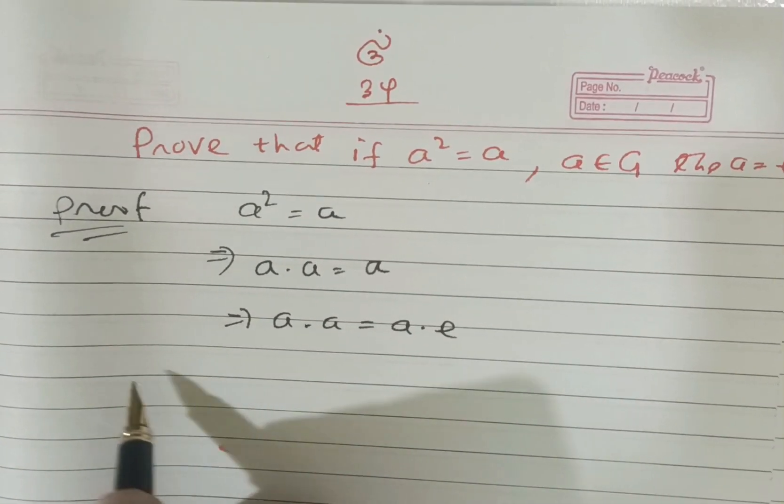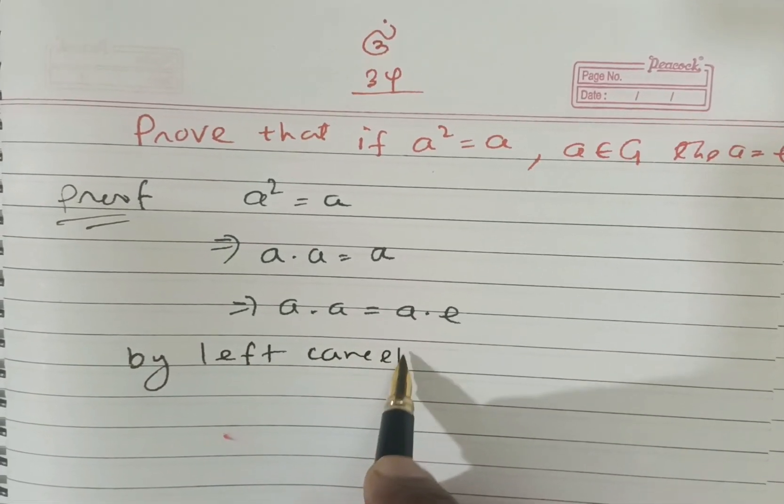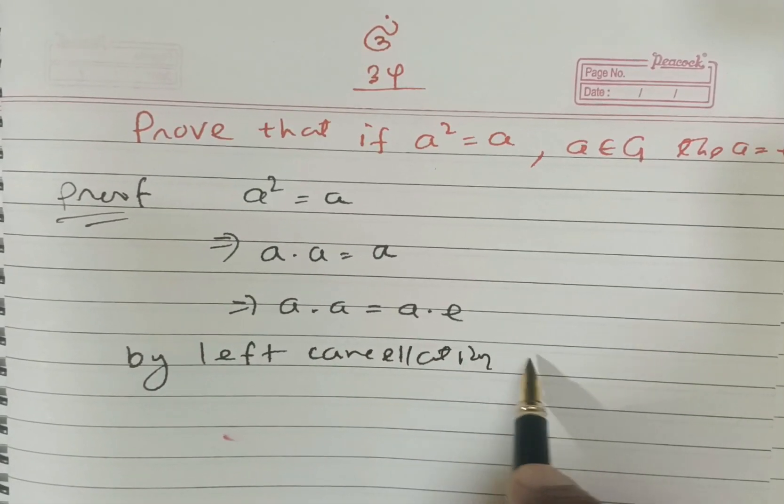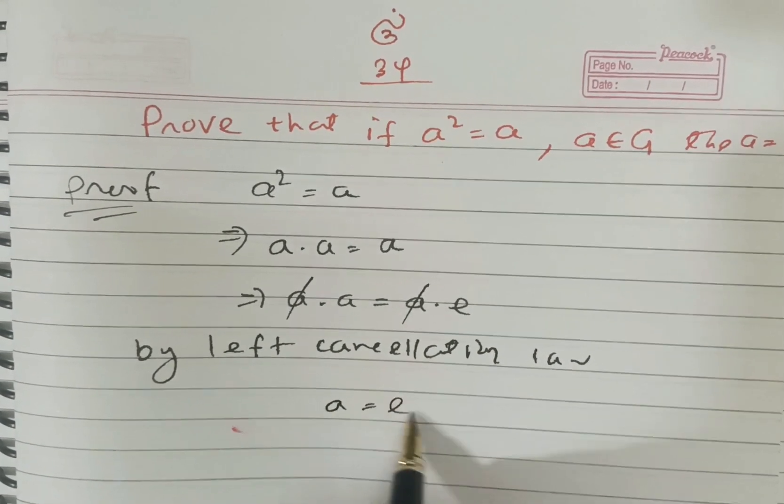Hence, by left cancellation law, you observe here we cancel a and a and a is equal to e.